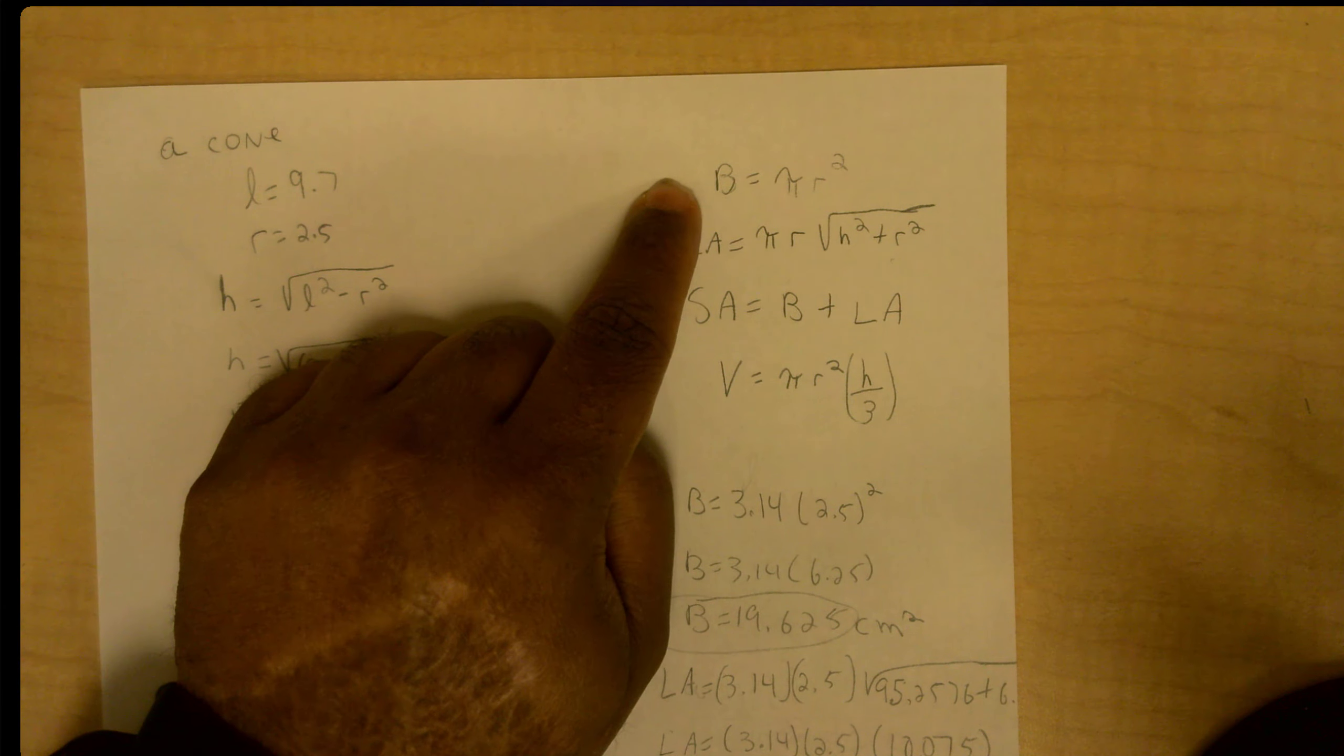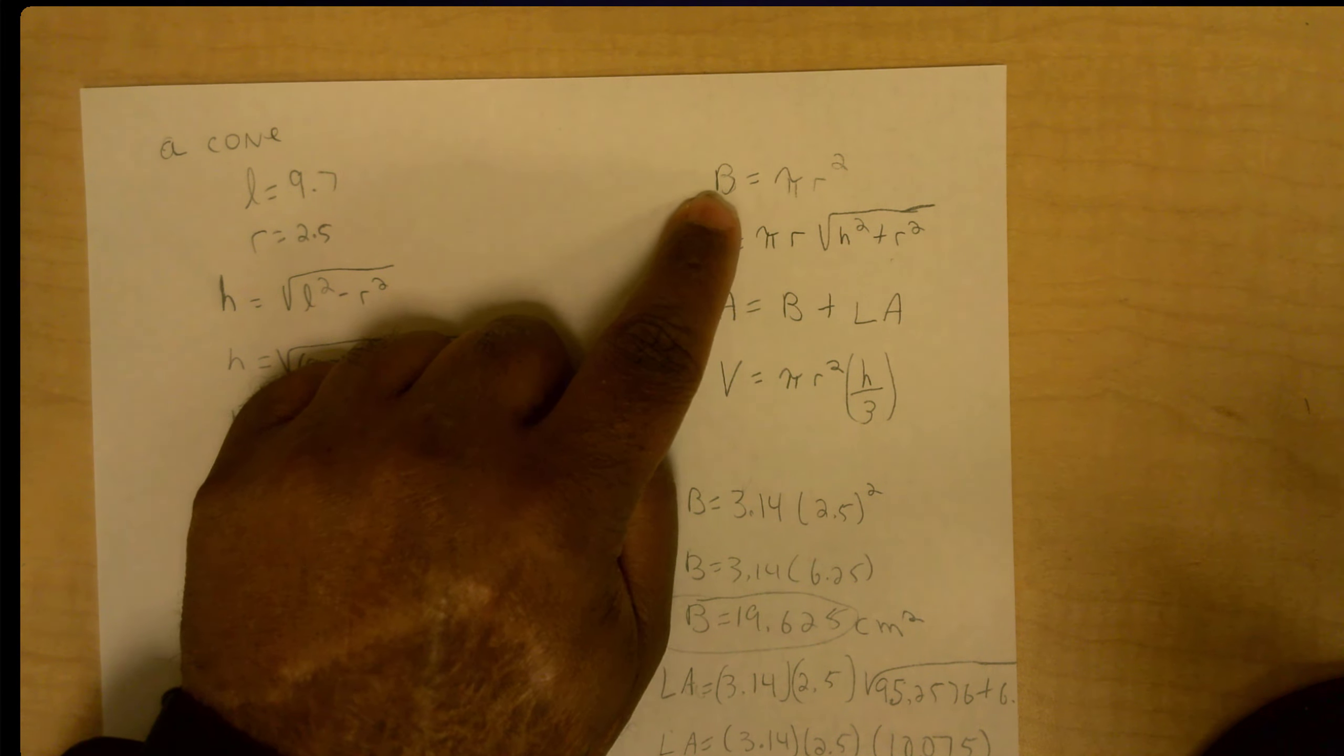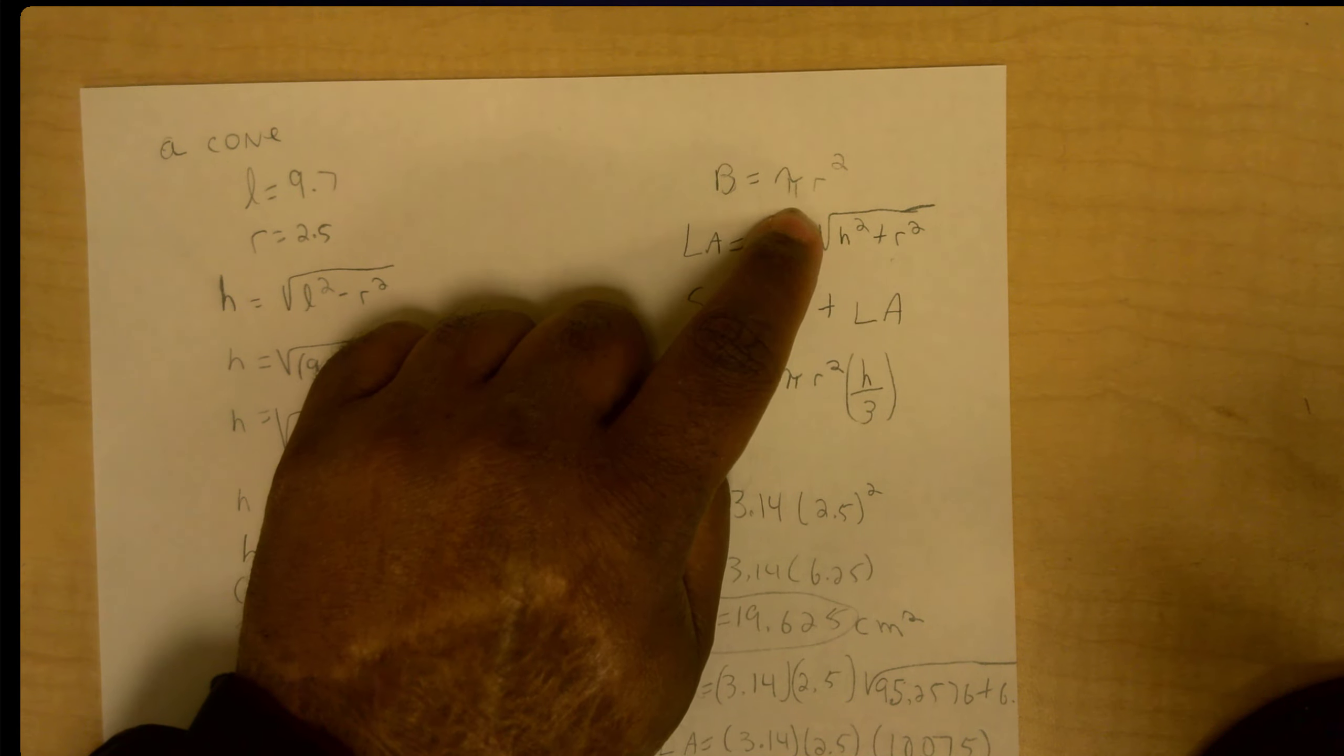These are some of the other formulas I used. My base is a circular base so my formula is Pi r squared.